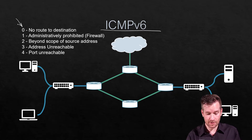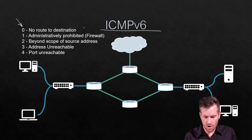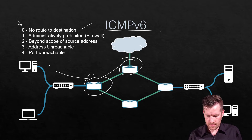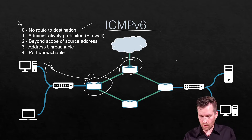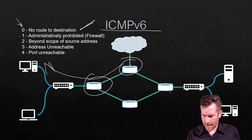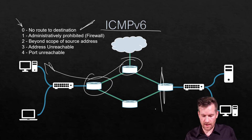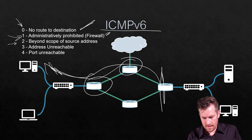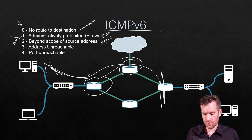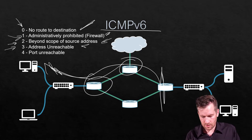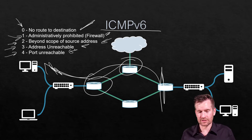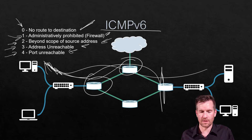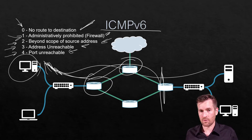ICMP also has some similar types that it can return, such as no route to the destination — perhaps one of these routers sends back a message that that network is not within our routing table. Perhaps there's a firewall in between, and so this firewall may return that you're not allowed to make it into that network and it's administratively prohibited. There is also the address unreachable and the port unreachable — several different types of messages that can be sent back to notify this machine why it has not reached its end destination.